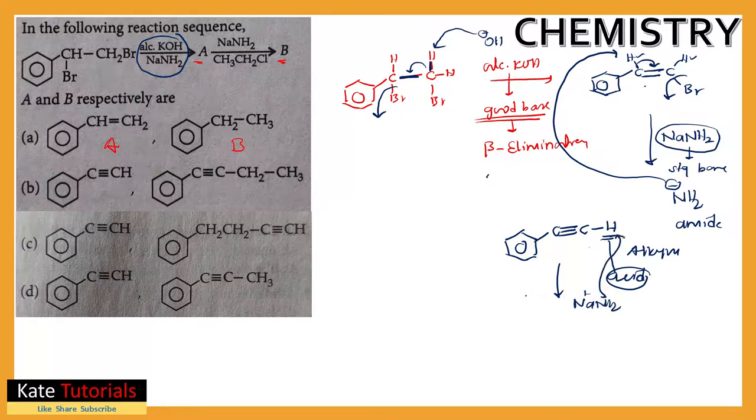Since it is acidic in nature, we again have NaNH2. It is a base, it can easily take this H+. So I'll get benzene ring with C triple bond C minus. So in the next step, this was my A product.